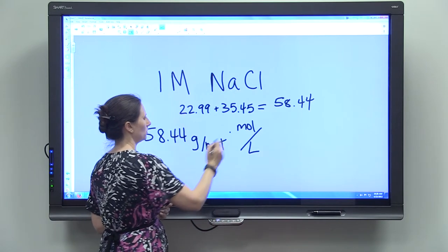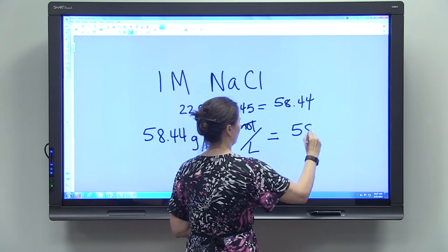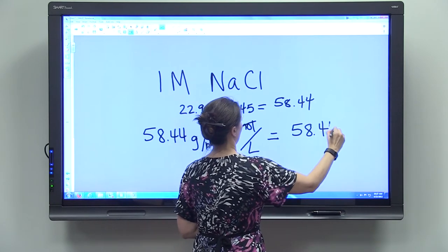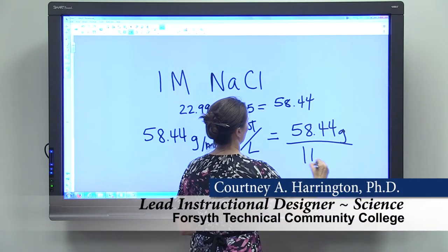So the moles would cancel out there, and a one molar solution would have 58.44 grams of sodium chloride per liter.